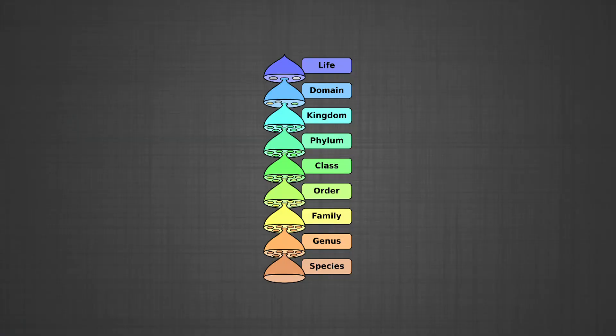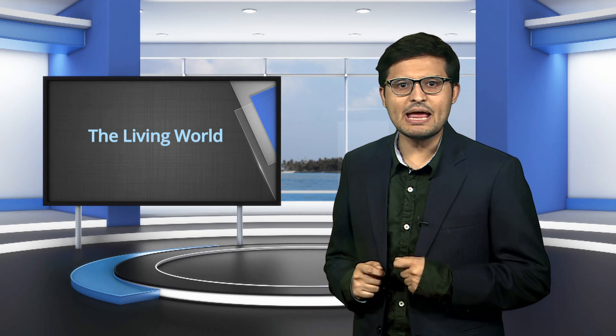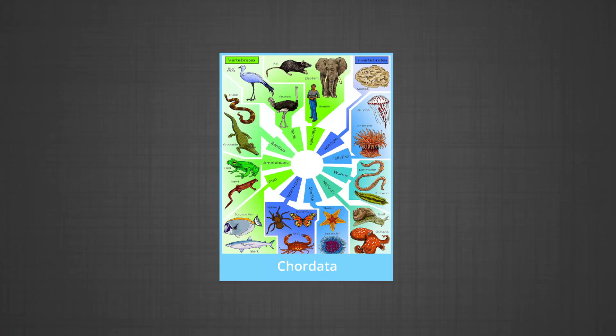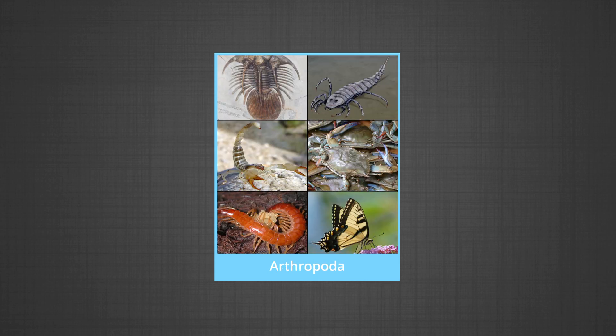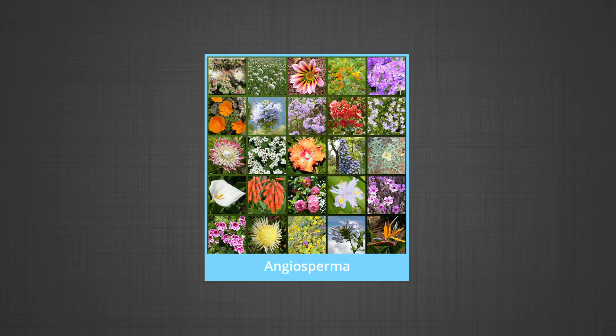Phylum, referred to as division in the case of plants and bacteria, is the taxonomic category between kingdom and class. A phylum is a major ranking of organisms defined according to the most basic body parts shared by that group. Examples include Chordates — animals with notochord and vertebrae; Arthropoda — animals with jointed pairs of legs and exoskeleton; Mollusca — animals with a shell-secreting mantle; and Angiosperms — the flowering plants.